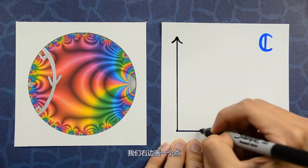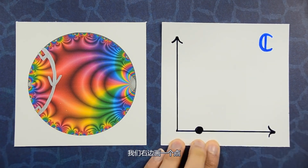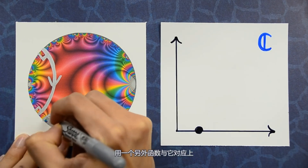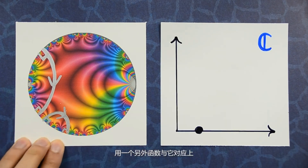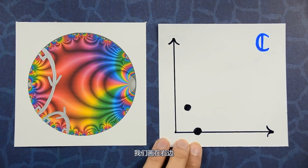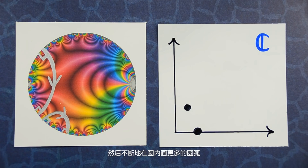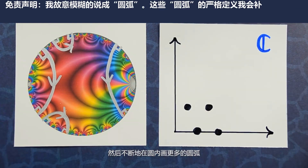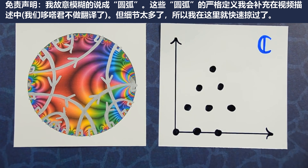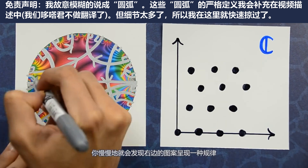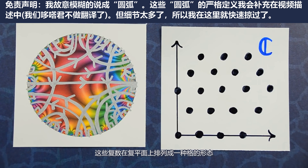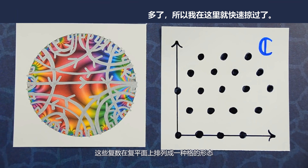That gives you a complex number. Let's plot that over here on the right. Now take another arc in the circle and integrate the function over that arc — that gives you another complex number. Let's plot it on the right. Now do that for more and more arcs in the circle. Slowly, you notice that a pattern starts forming on the right: the values form a lattice in the complex plane.